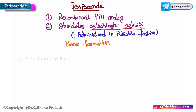It promotes bone formation and has a net anabolic effect on the bone. It is also responsible for the regulation of calcium and phosphate homeostasis, mainly by the kidneys as well as the intestine. This is the main mechanism of action of teriparatide.